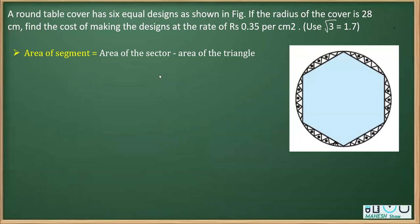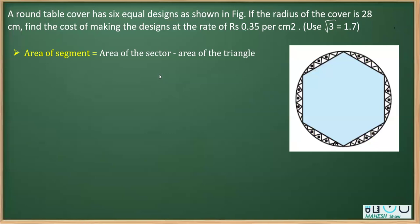In this video I'm going to solve one question from the topic of areas related to circles. The question says there is a round table cover that has six equal designs. You can see the designs in the figure — these are identical or congruent figures. Therefore, to find the area of six such designs, we can find the area of one and then multiply by six. We need to find the area of the whole design.